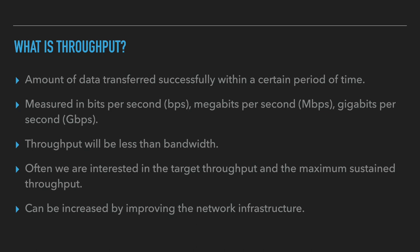The bandwidth is the theoretical maximum capacity of our network. Often we are interested in the target throughput and the maximum sustained throughput. The target throughput is the real-world observed throughput that we use when making decisions around scaling, and this value is chosen so that spikes in load or a node going offline don't cause issues in the system. The maximum sustained throughput is the maximum throughput we can sustain indefinitely without our system becoming degraded.